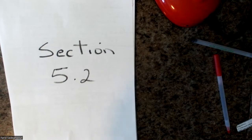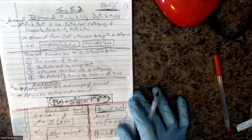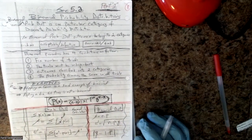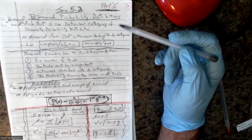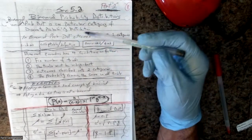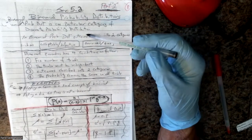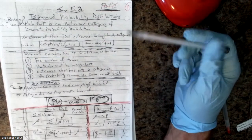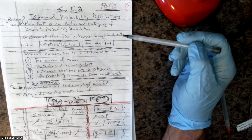Section 5.2, Chapter 5. There is a special kind of distribution called the binomial probability distribution. Binomial probability distribution is one particular category of discrete probability. In a binomial probability distribution, outcomes belong to two categories.